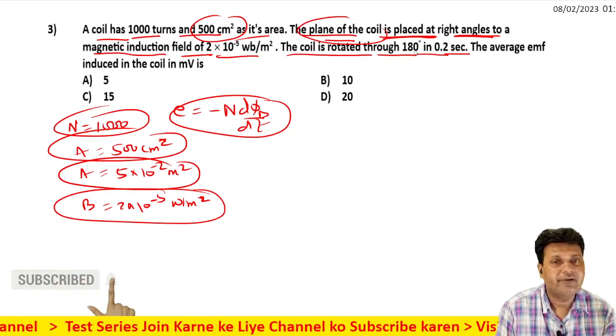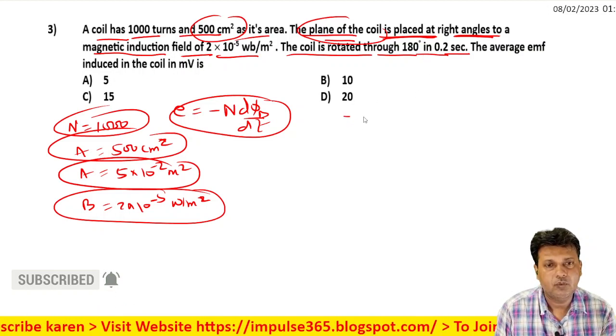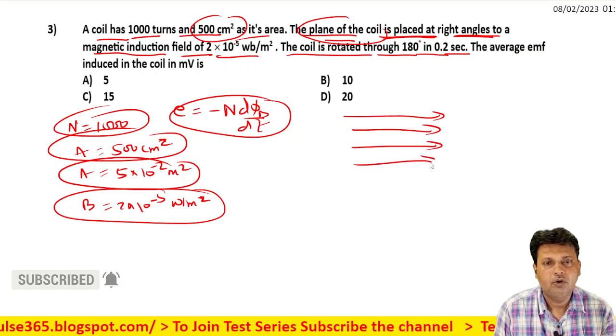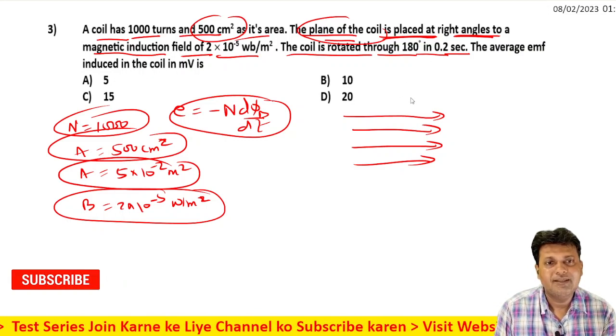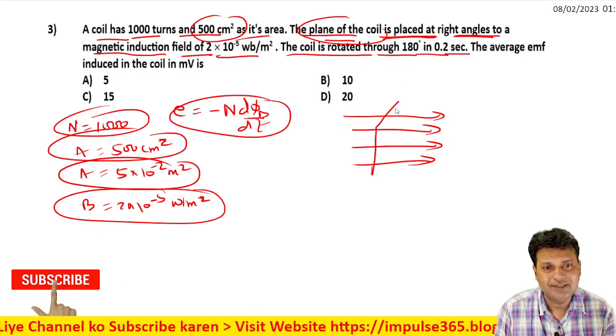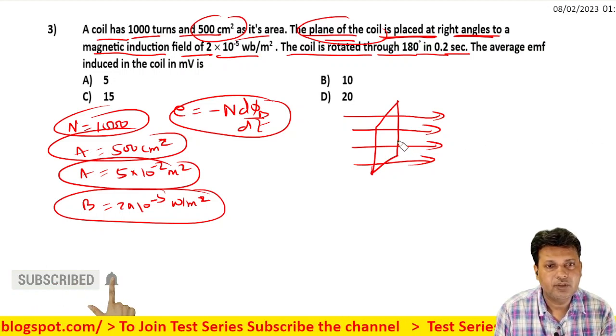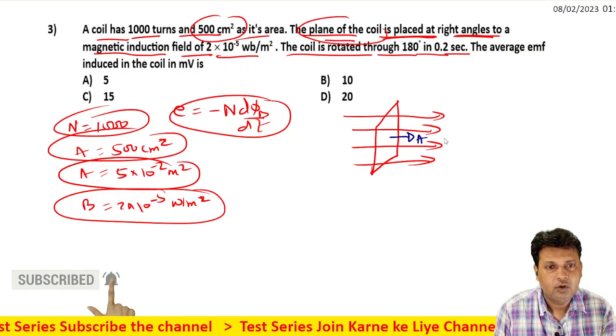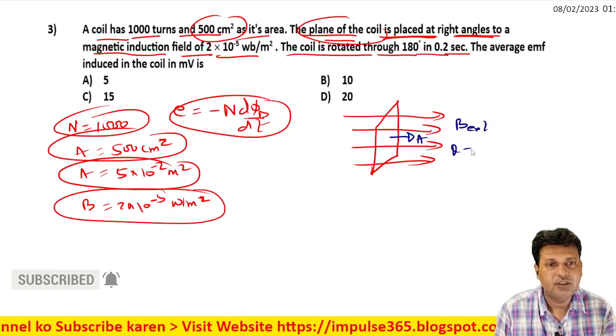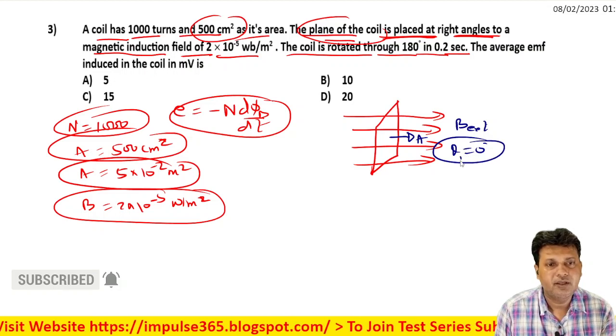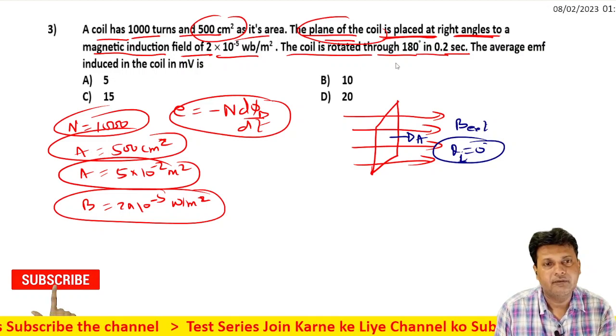The coil is placed at right angles, meaning the plane of the coil is perpendicular to the magnetic field direction. The area vector direction and the magnetic field direction—the external magnetic field direction—so theta is equal to 0 degrees initially, and then theta becomes 180 degrees.